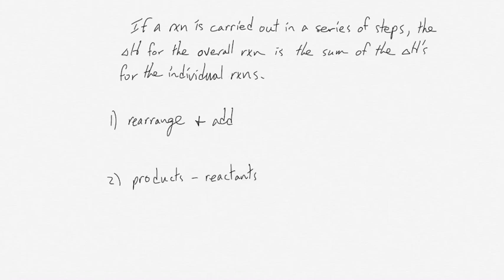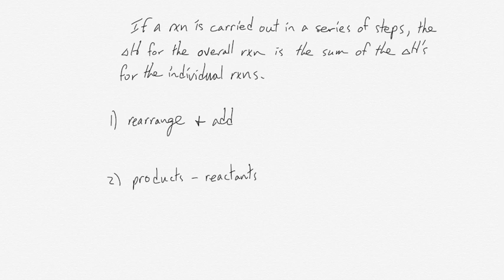Hess's law says that if a reaction is carried out in a series of steps, the delta H for the overall reaction is the sum of the delta H's for all of those individual reactions. And this can be done for any set of equations that can be rearranged and added together to give an overall equation.